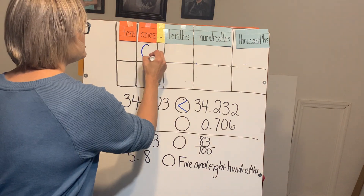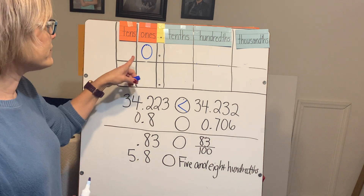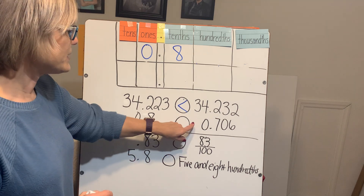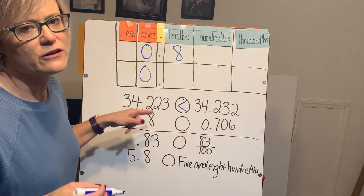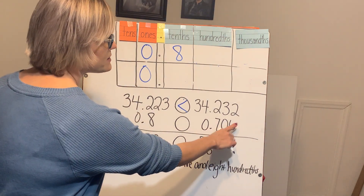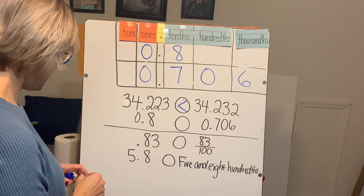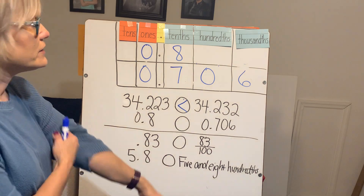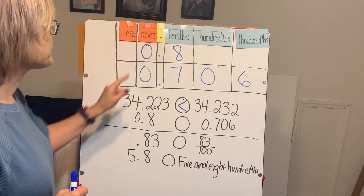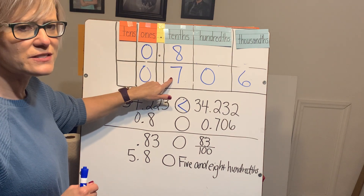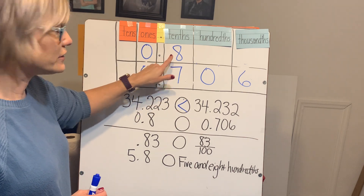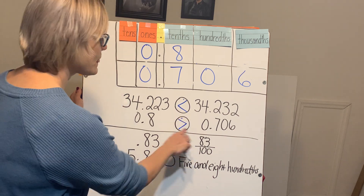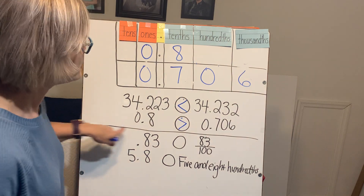We have eight tenths — there's a zero in the ones place, but that just means there's nothing there, so we read it the same way whether the zero is there or not: eight tenths. Compared to seven hundred six thousandths — again, the zero in the ones doesn't matter. The ones are both zeros, so there's no value in the whole number section. Comparing the tenths: eight tenths versus seven tenths. Eight tenths is bigger, so eight tenths is greater than seven hundred six thousandths.